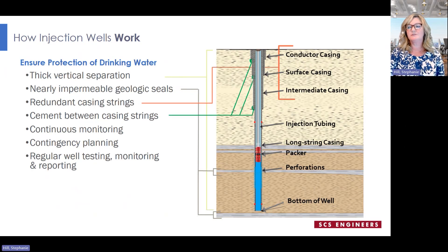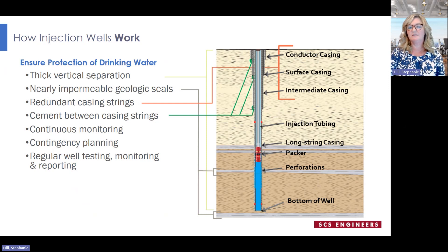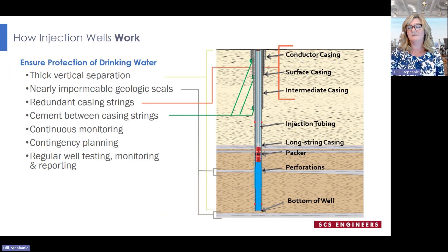Injection wells are installed with multiple strings of steel pipes or casing — think of a set of nested toys, one within another. Each string of steel casing is progressively smaller and is cemented into place. This method of construction creates redundant barriers between the injected fluid and the protected drinking water aquifers. Requirements for continuous monitoring and frequent well testing ensure the well maintains its integrity. When injection wells are sited in areas with suitable geology, properly designed and installed, and when monitoring and reporting testing plans are properly implemented, injection wells can be a safe and effective means to dispose of things we don't want in our environment and help protect our drinking water aquifers.